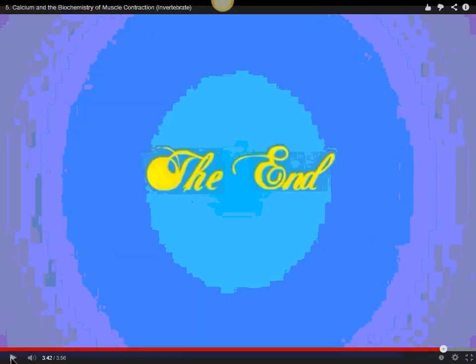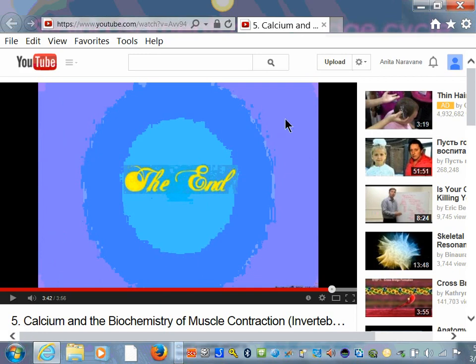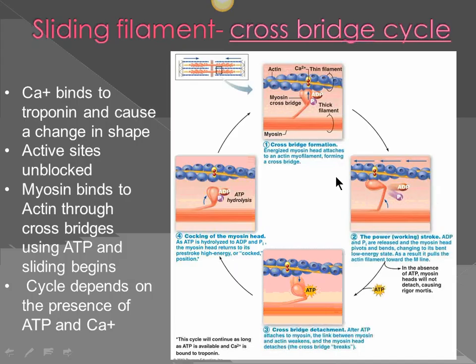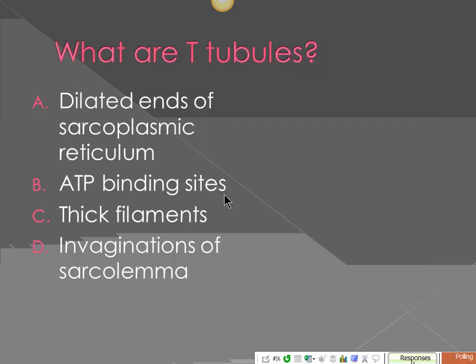So you saw how ATP was needed — it was hydrolyzed, the filament was pulled, and then another ATP molecule was acquired when the myosin detached. It hydrolyzes again and keeps pulling. As long as ATP and calcium are available, the muscle will keep on contracting. Now let's do a little review: what are T-tubules?